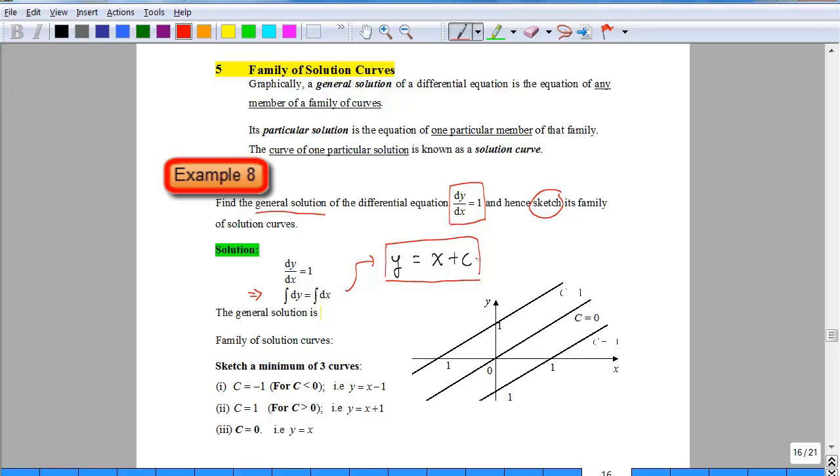The fact that arbitrary constant c is within the equation is the reason that you could get a family of solution curves by giving c different values. In fact, there are infinitely many values that c could take, so that it gives you the family of curves. For examination purposes, in terms of presentation of answer, you are required to only give a minimum of 3 curves.